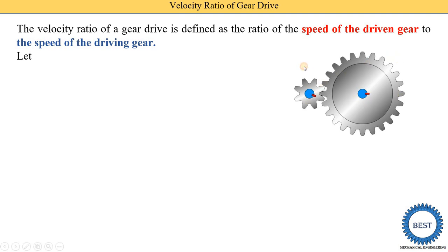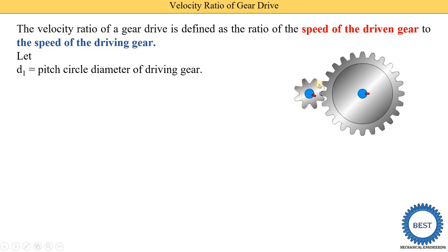First we understand a few parameters. D1 is the pitch circle diameter of the driving gear — this smaller gear has some pitch circle diameter, so it is called D1. D2 is the pitch circle diameter of the driven gear. This larger gear is the driven gear, and its pitch circle diameter is denoted as D2.